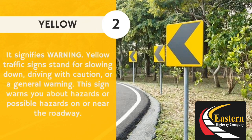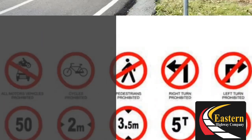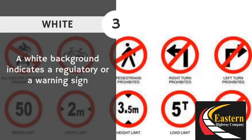Yellow color: it signifies warning. Yellow traffic signs stand for slowing down, driving with caution, or a general warning. This sign warns you about hazards or possible hazards on or near the roadway.